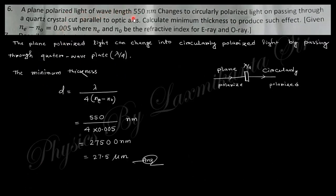A plane polarized light of wavelength 550 nanometers changes to circularly polarized light on passing through a quartz crystal cut parallel to optic axis. Calculate minimum thickness to produce such effect. Plane polarized light can change into circularly polarized light by passing through a quarter wave plate. The formula for minimum thickness is d = λ/[4(nₑ - n₀)]. Just put the value of λ/4 and we get d = 2700 nanometers = 2.7 micrometers.